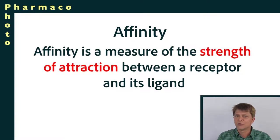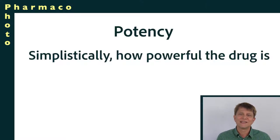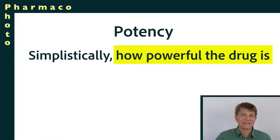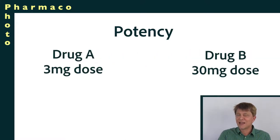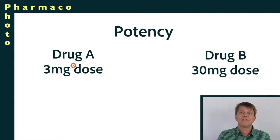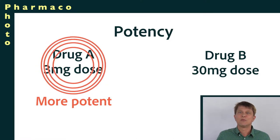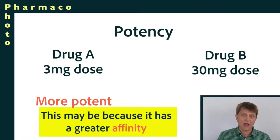Later in this course, we'll see how affinity is going to contribute to potency. Potency is described as the measure of the drug's activity in terms of the amount of drug needed to produce a certain effect. So if two drugs do exactly the same thing and one only needs three milligrams while the other needs 30 milligrams, the one with the three milligram dose has the stronger potency — and it may have a lot to do with the binding of the medication to its receptor.